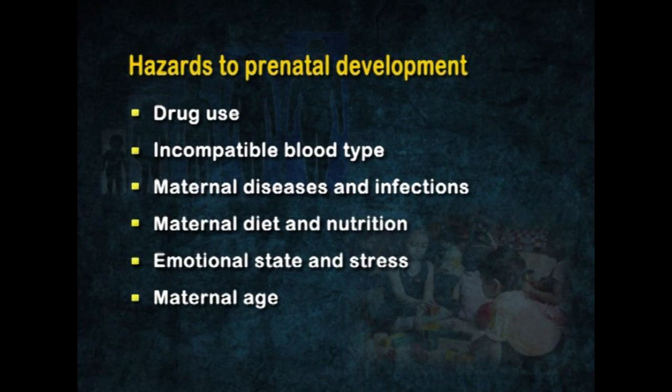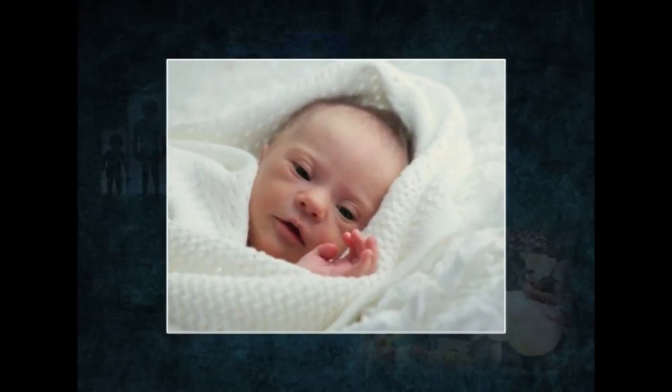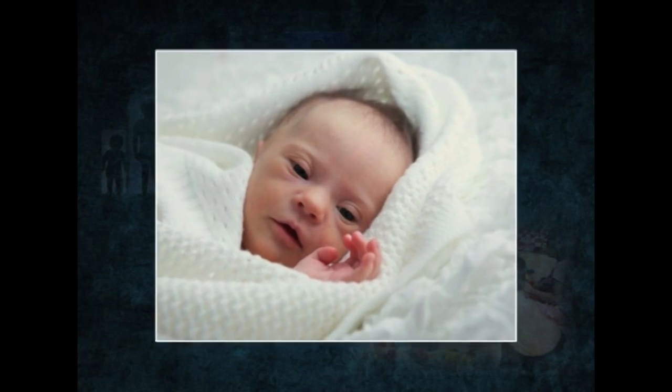The next important factor is maternal age. Maternal age is also linked to the risk that the child will have Down syndrome, a form of mental retardation. A baby with Down syndrome is rarely born to a mother below age 16 or above age 40. However, when the mother reaches 40 years of age, the probability of having a child with Down syndrome increases significantly.